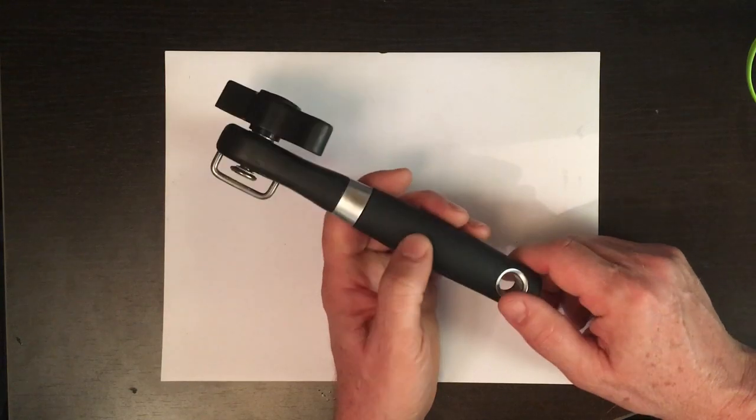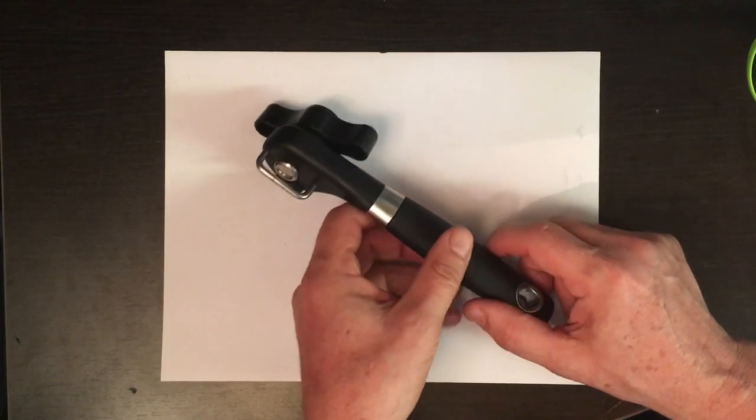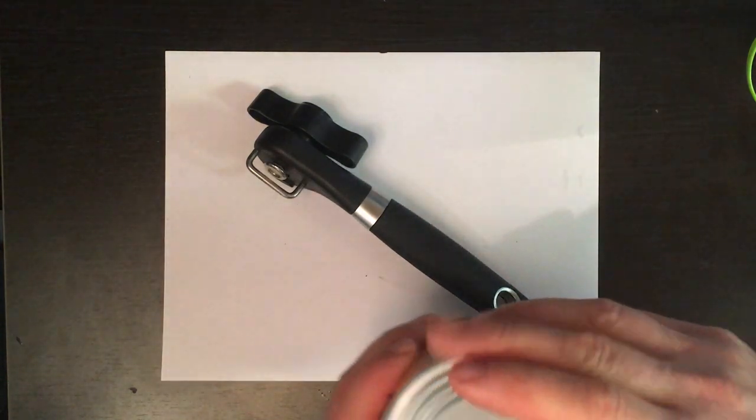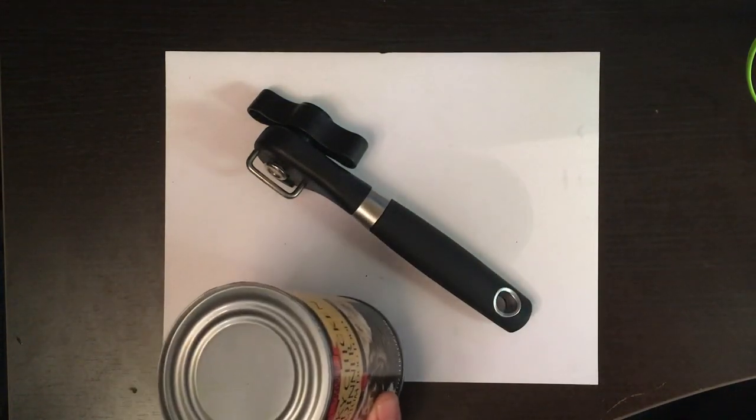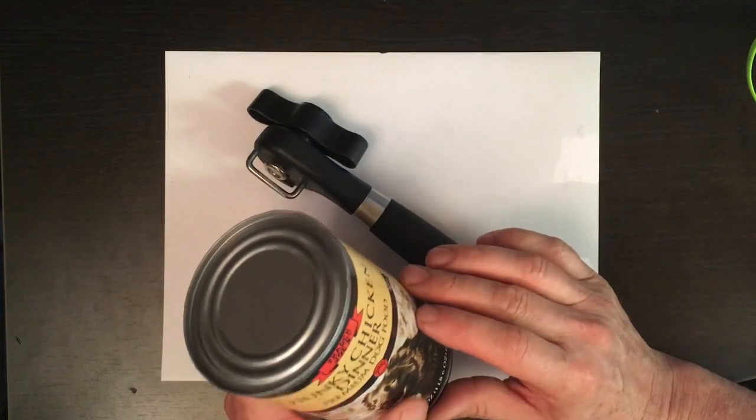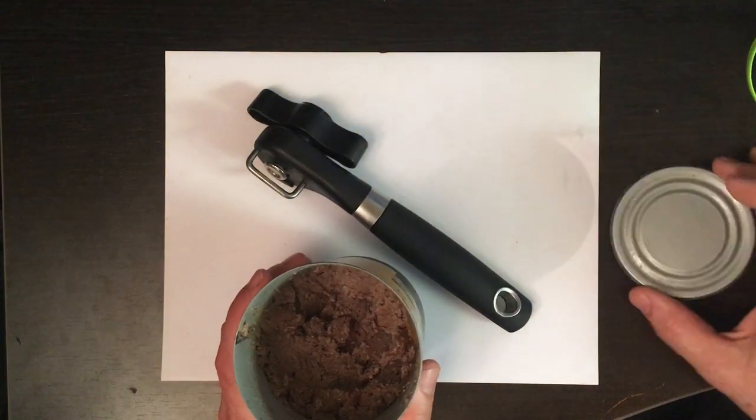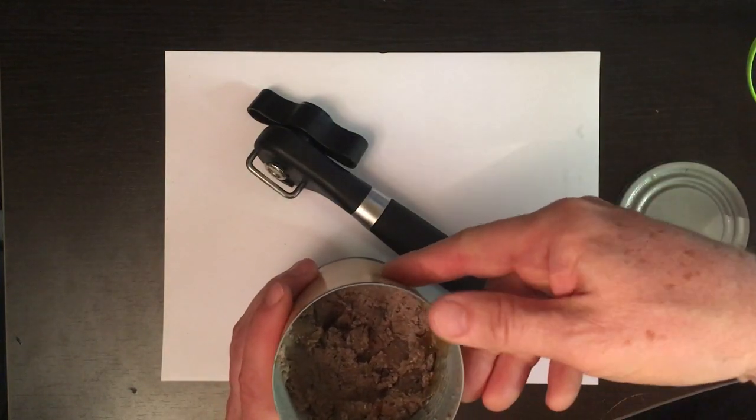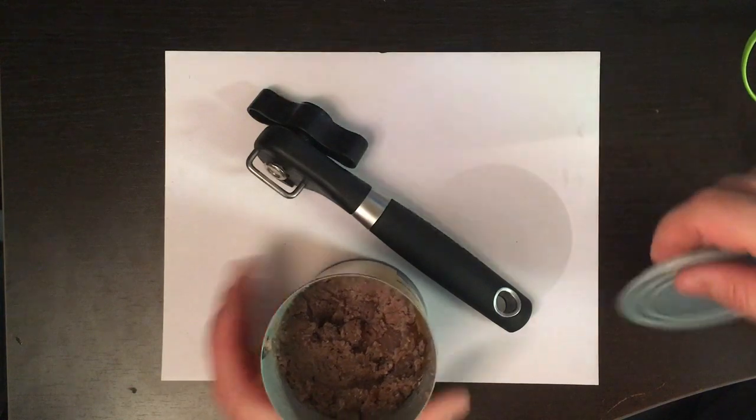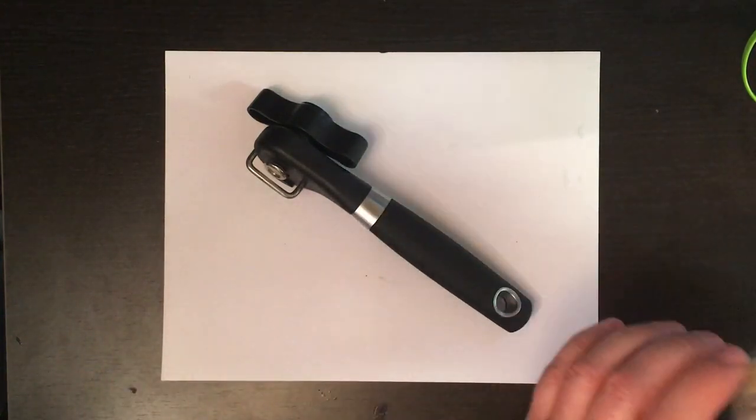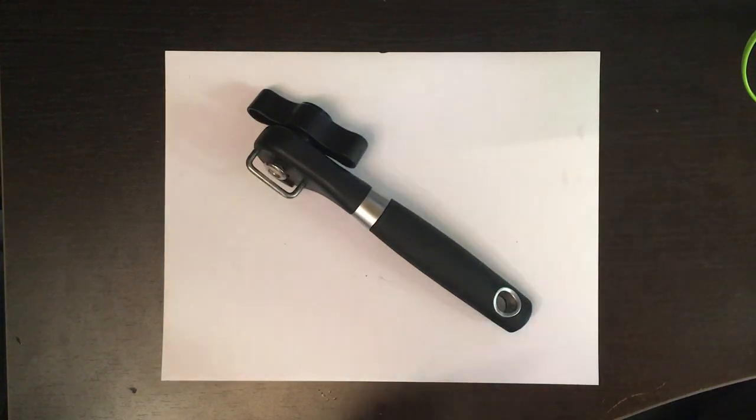Number three, this is a smooth edge can opener which means no sharp edges, no cuts, safe for kids, safe for pets. I have this rascally dog and he loves to get into the trash and take cans out and lick them to death. This is a can of dog food that I opened for him today. Basically no sharp edges at all, totally smooth. This lid not a problem at all, so don't have to worry there.